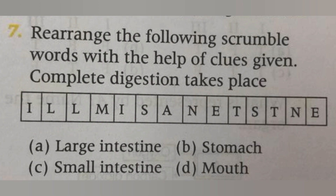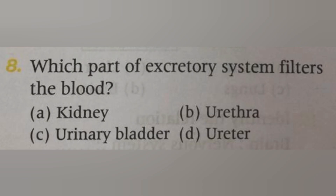Next, which part of the excretory system filters the blood? A. Kidney, B. Urethra, C. Urinary bladder, D. Urethra. The answer is A, kidney. The kidneys filter the blood of our body.